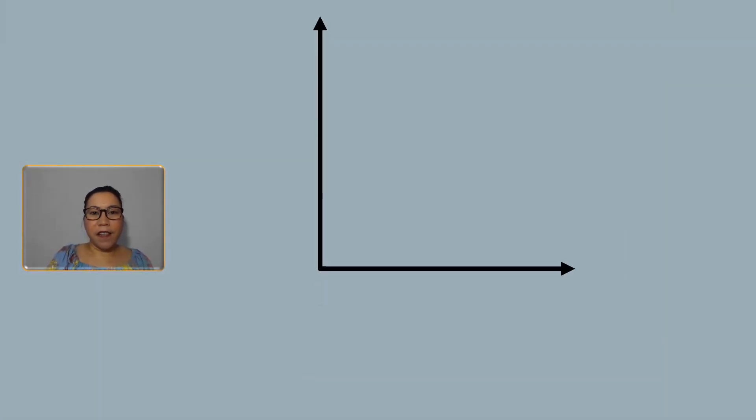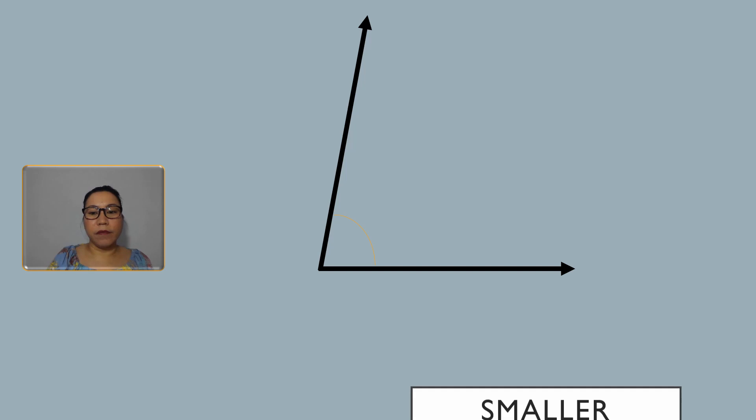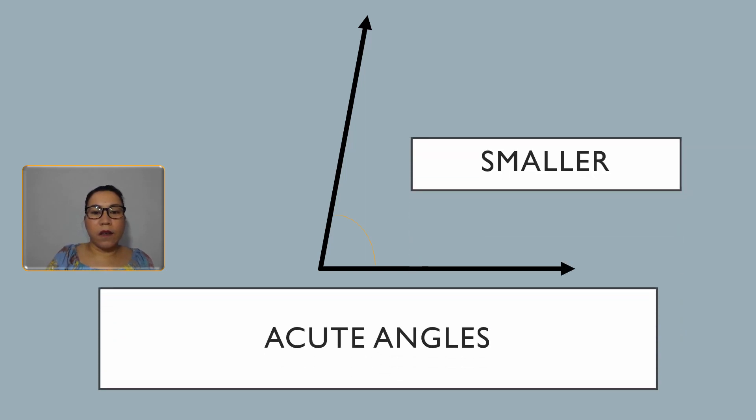The two rays of a right angle are perpendicular to each other. Now, what if I move one line clockwise a little like this? They are not perpendicular anymore. But you can see an angle which is a little smaller than the right angle. We call these acute angles. Acute angles are angles smaller or less than right angles.